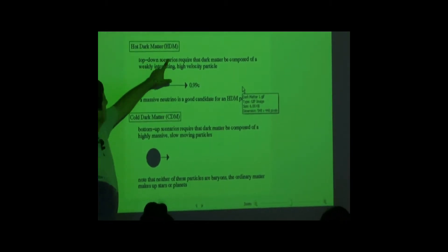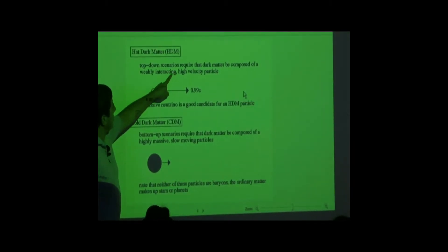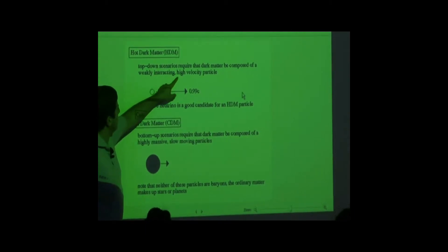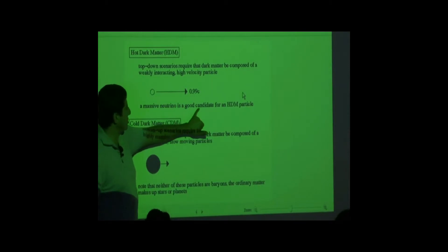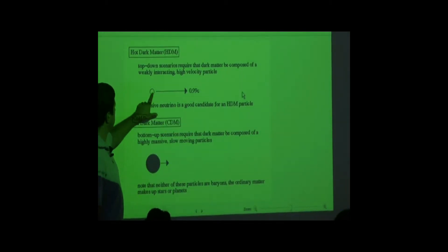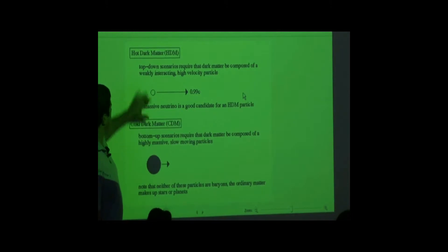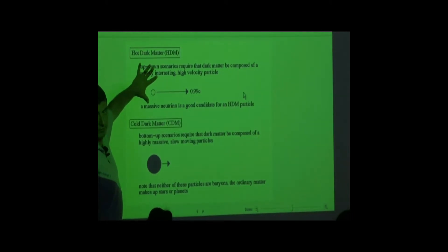Hot dark matter, HDM, the top-down scenarios require that dark matter be composed of a weakly interacting high-velocity particle. A massive neutrino is a good candidate for hot dark matter. Traveling at 0.99 the speed of light. Those are the hot dark matter model.